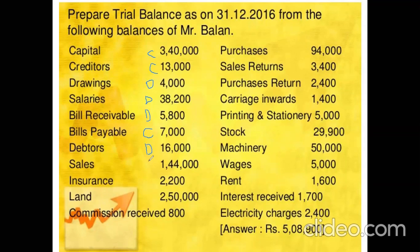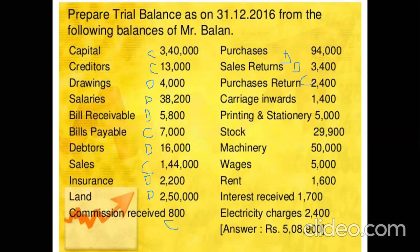Sales is a gain, so it will have a credit balance. Insurance is an expense — debit balance. Land is an asset — debit balance. Commission received is income — credit balance. Purchases are an expense — debit balance. Sales return is the reverse of sales — debit balance. Purchase return is the reverse of purchases — credit balance. Carriage inward is an expense — debit balance.